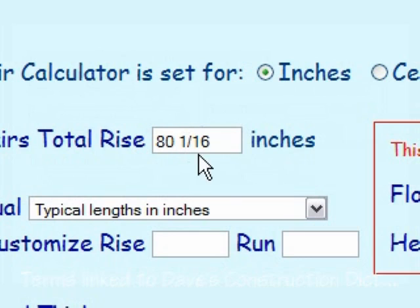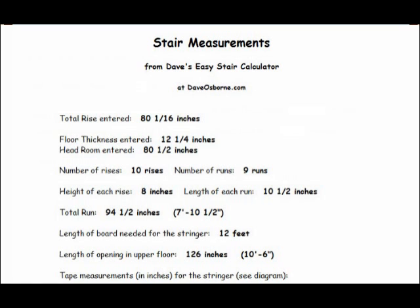When you enter a fraction, always separate the fraction from the whole number with a space. Use the forward slash to separate the top number and bottom number of the fraction, otherwise the calculator won't know it's a fraction and you'll get incorrect results. The printout of the results will say exactly what the numbers were used for the calculation, so you can check those when you look over the printout.